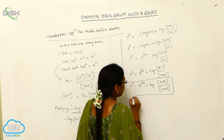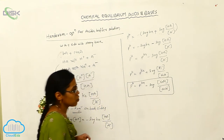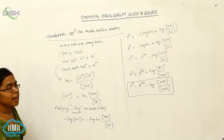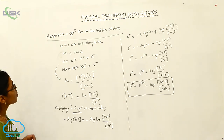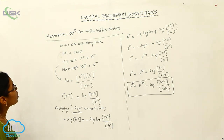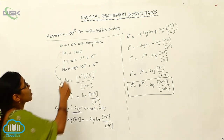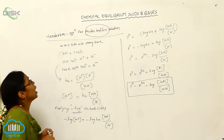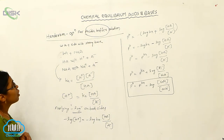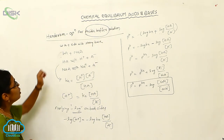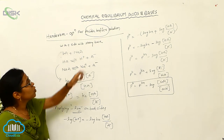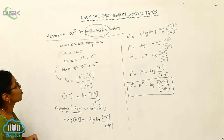This is also called the Henderson equation. For the Henderson equation, we are dealing with the acidic buffer solution — the combination of a weak acid plus salt with a strong base.